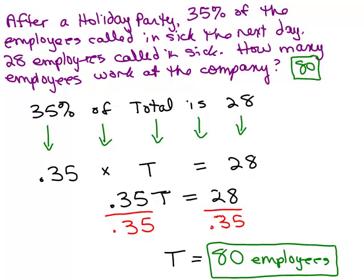Okay. So you can check by actually doing the 0.35 times 80 and making sure you get 28. That would be a way to check it to make sure, or you could also ballpark it. So we've got our answer, 80 employees work at the company.